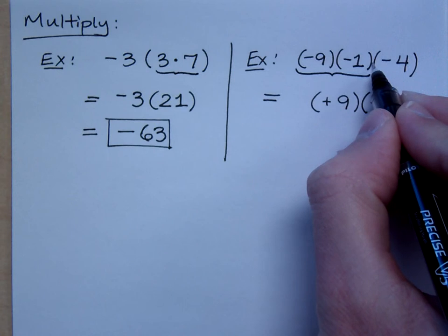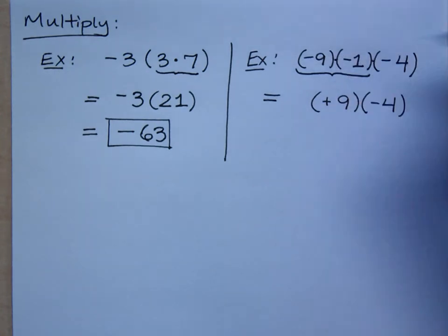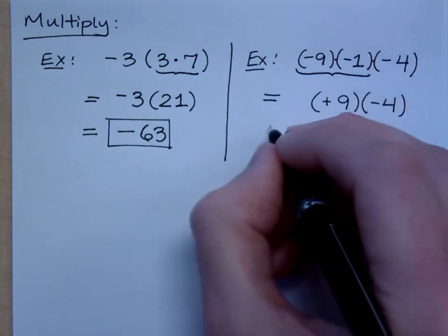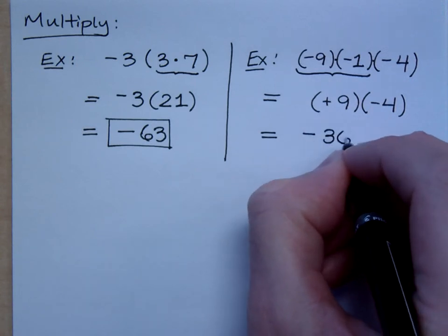This isn't addition, is it? No. When things are right next to each other, it's understood to be multiplication. So, positive 9 times negative 4 is what? Negative 36. It's a negative 36.